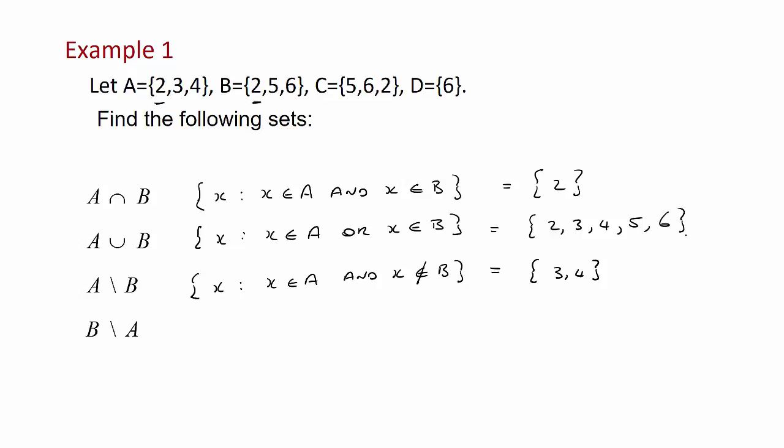And B not A. Again we've got the same, well not quite the same. So it'll be X such that X is a member of B and X is not a member of A. That'll just be 5 and 6.